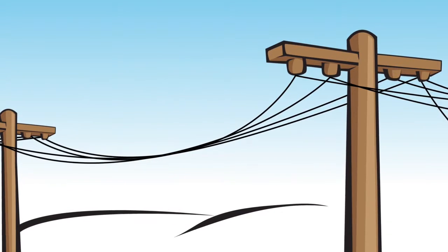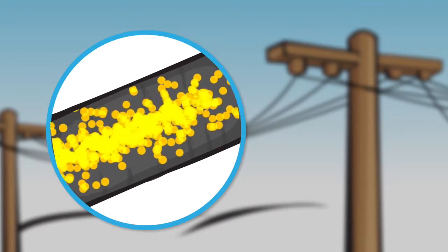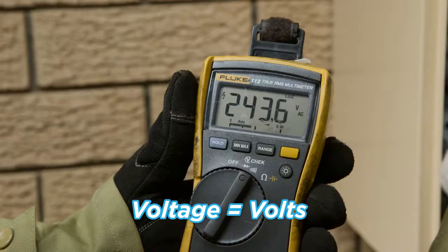The pressure under which electrons flow is known as voltage and is measured in volts.